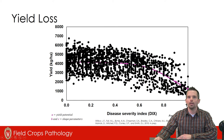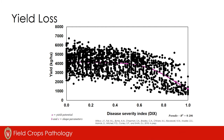In terms of yield reductions, we previously knew there was traditionally a linear response between increasing disease development and decreasing yield. However, with modern soybean varieties which have a bushy phenotype, the yield loss really isn't linear. As the disease severity index value increases, we actually have a point where the curve or relative yield loss is fairly static or level, before we get into a steep part of the curve.